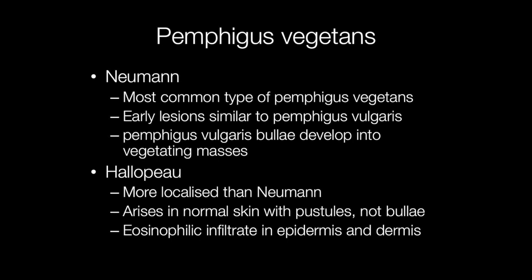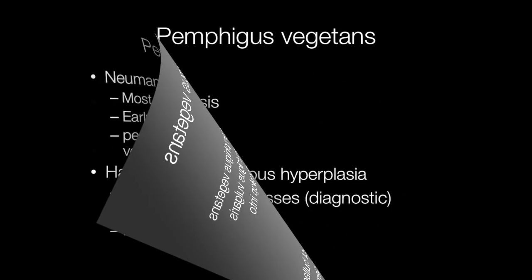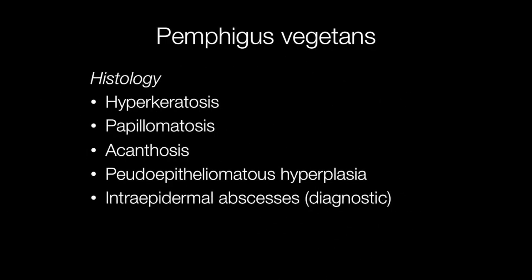The other and less common type is the Hallopeau variant. In this type, the lesions arise on normal skin with pustules — not bullae — and the lesions are characterized by an eosinophilic infiltrate in the epidermis and dermis.